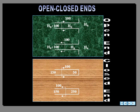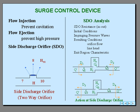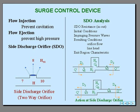We have surge control devices. These are almost always based on flow entering or leaving the system. And we set up a subroutine to handle these devices. These include open and closed surge tanks, feed tanks, bladder tanks, pressure relief valves, surge anticipation valves, and air valves, which have an effective inflow and outflow orifice.